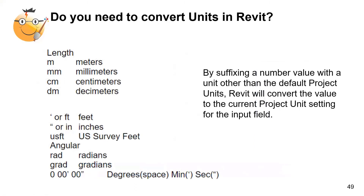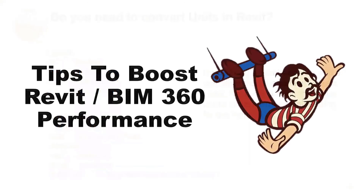A quick tip on unit conversion in Revit: don't bother changing your project units. Just type the unit abbreviation next to the number value and Revit will do the math and convert the dimensions to whatever units you want.